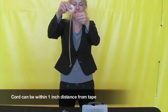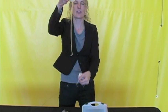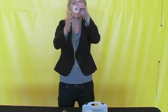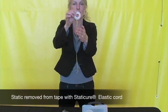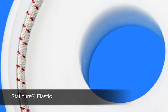The cord doesn't need to make contact with the material, it just needs to come within one inch of the surface. You can see that the static charge has been removed from both sides of the material using the Static Cure elastic cord.